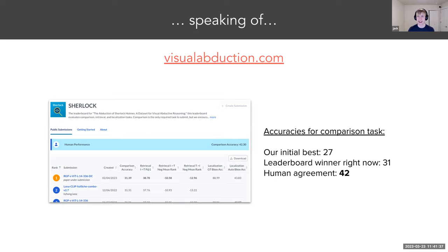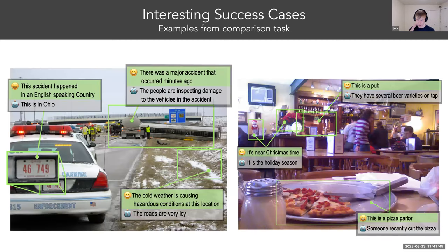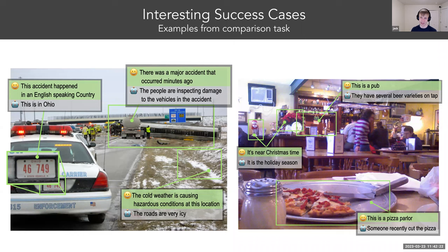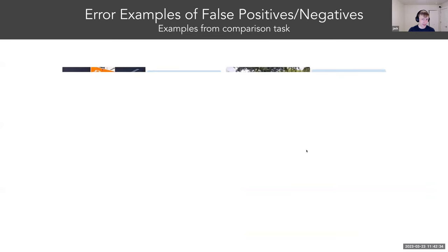Our initial best score for the human comparison task was 27 accuracy points when we submitted the paper. The leaderboard winner right now is at around 31 after about 70 submissions, which is really cool. But human agreement is at 42 — so this is a subjective task where agreement isn't 100%, yet we've carved out this gap again between model performance and human performance. Sample predictions from the model include things like 'the road is icy' for a traffic accident scene, and predictions about poinsettias indicating the holiday season — something the model taught me about red flowers that come out at Christmas time.